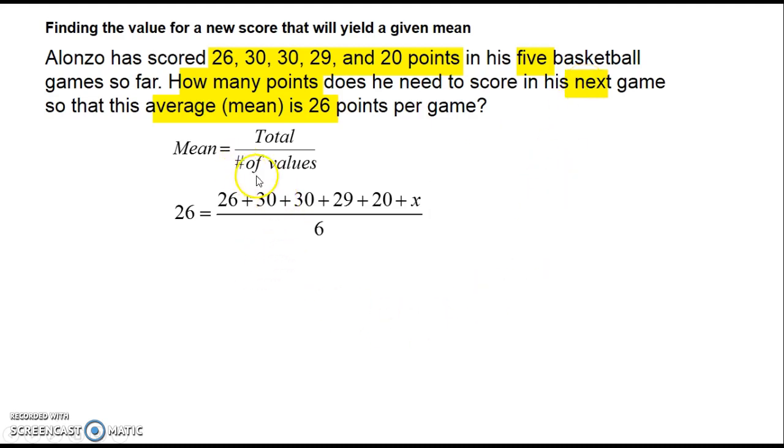You must remember to divide by 6 because we have to include his next game. Now, let's tidy up the equation. Add these numbers together, and you get 26 equals 135 plus x divided by 6.